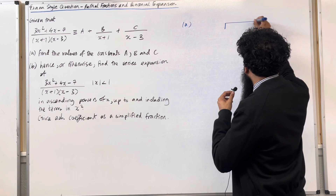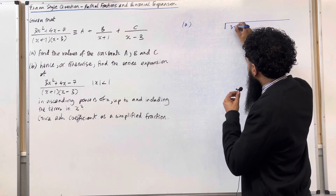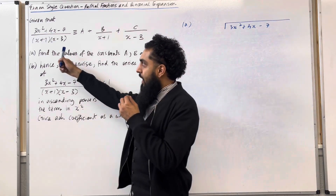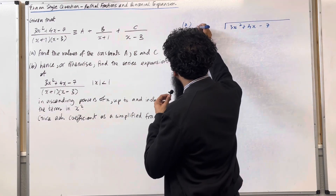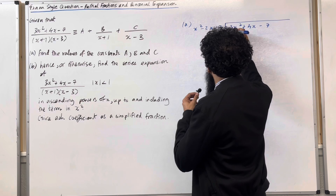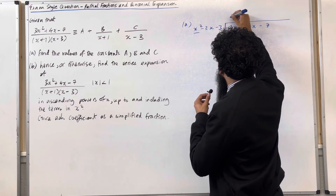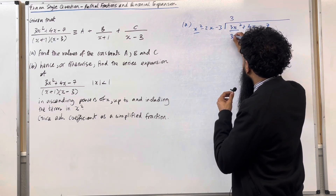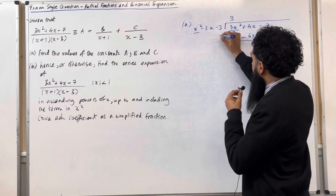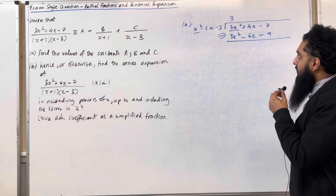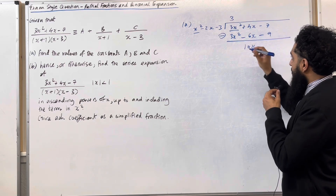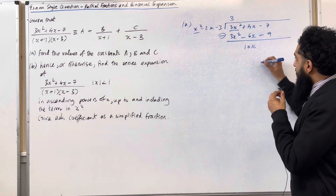Let's carry out polynomial division. Inside I've got 3x squared plus 4x minus 7. On the outside, I've got the double bracket expanded, so x squared minus 2x minus 3. 3x squared divided by x squared is 3. 3 multiplied by this quadratic is 3x squared minus 6x minus 9. Subtracting: 3x squared minus 3x squared is 0, and 4x minus minus 6x is 10x.